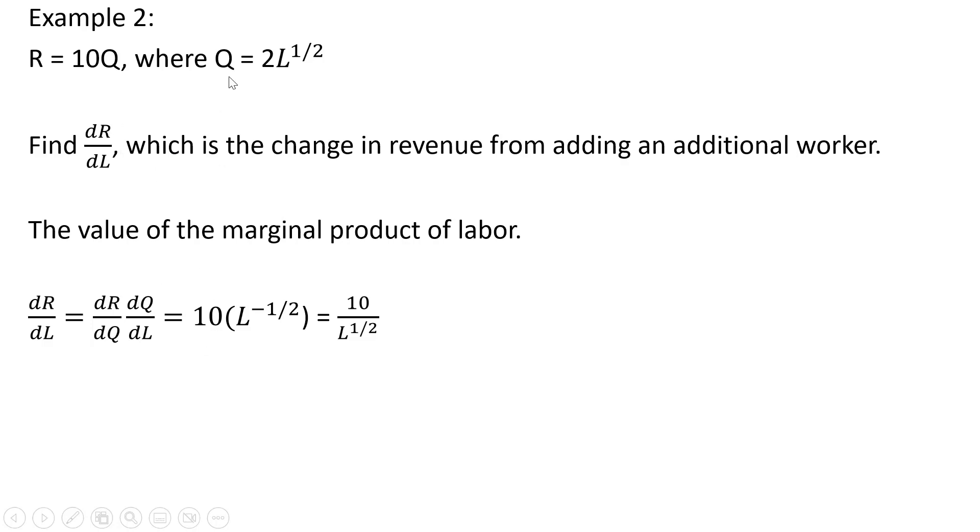Now we're going to take the derivative of this q equation, which is essentially a production function. So we can take the derivative of this equation with respect to l, and we're going to get back l raised to the minus 1 half power. So this exponent comes down in front, so 1 half times 2 just leaves us 1. And then we subtract 1 from this exponent, so 1 half minus 1 is where this l to the minus 1 half term is coming from. And just moving this l to the minus 1 half into the denominator, we have this result.